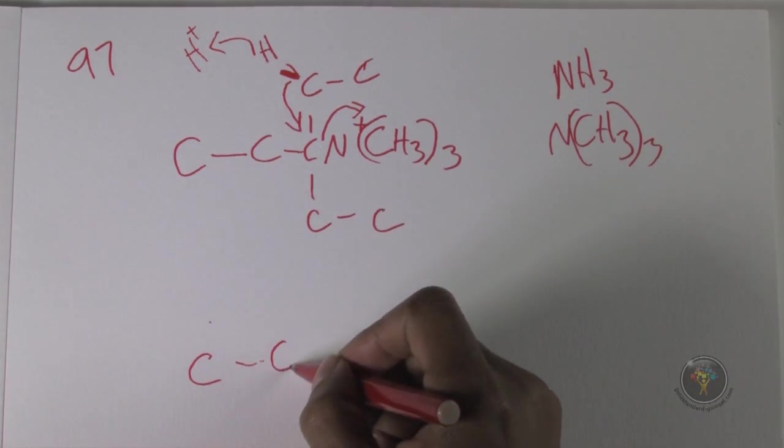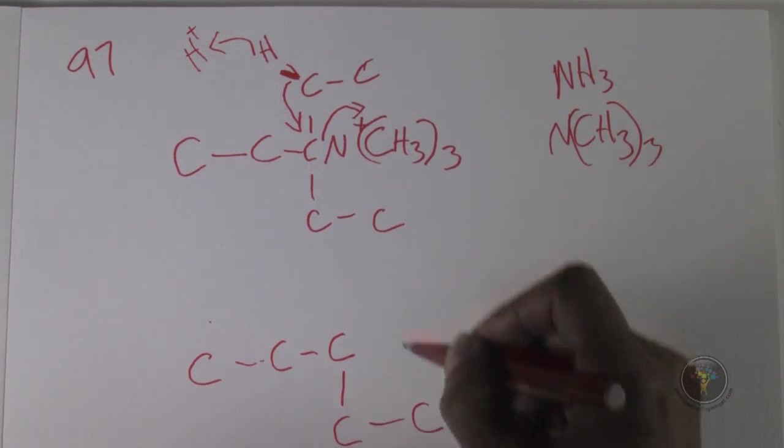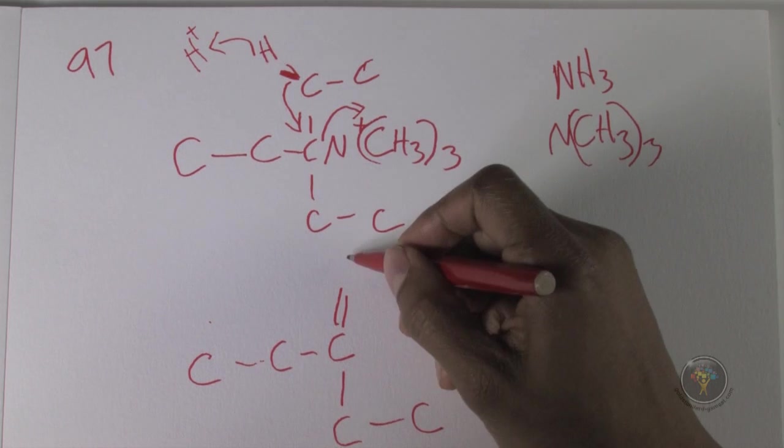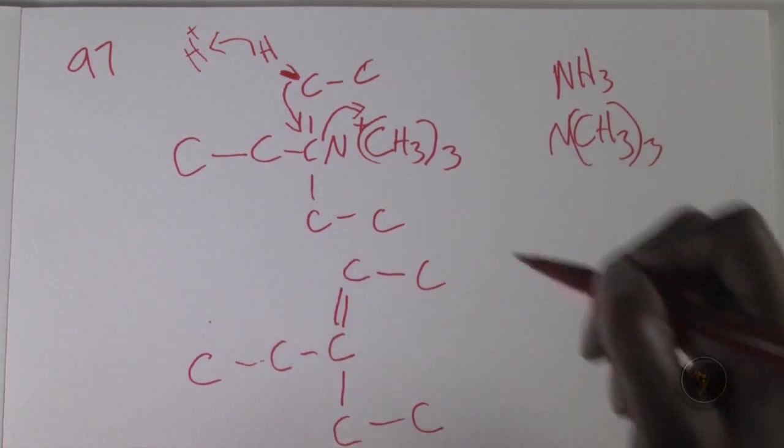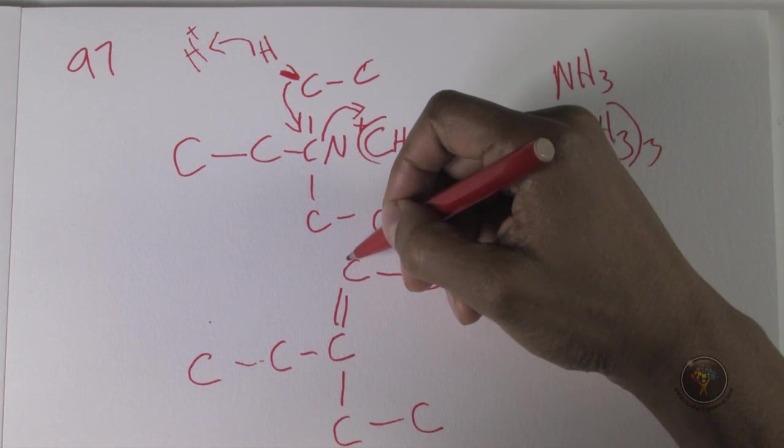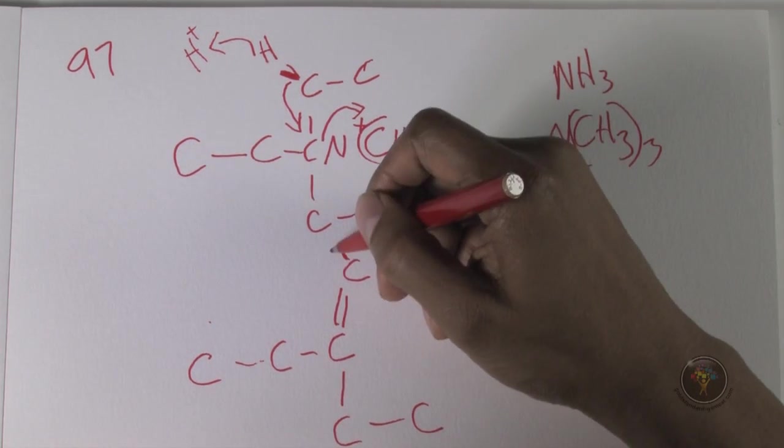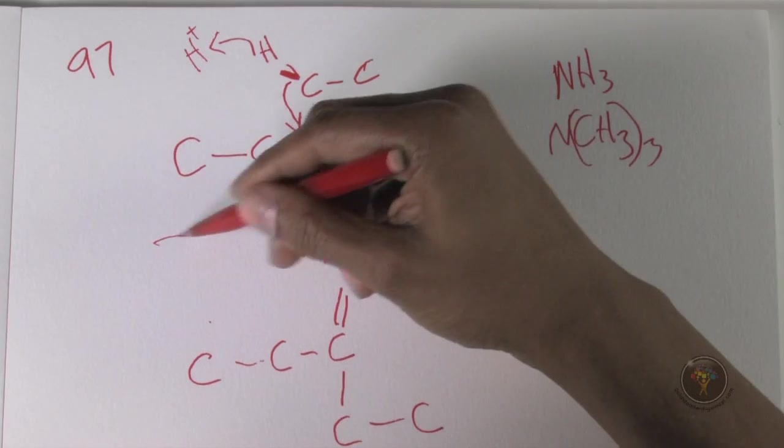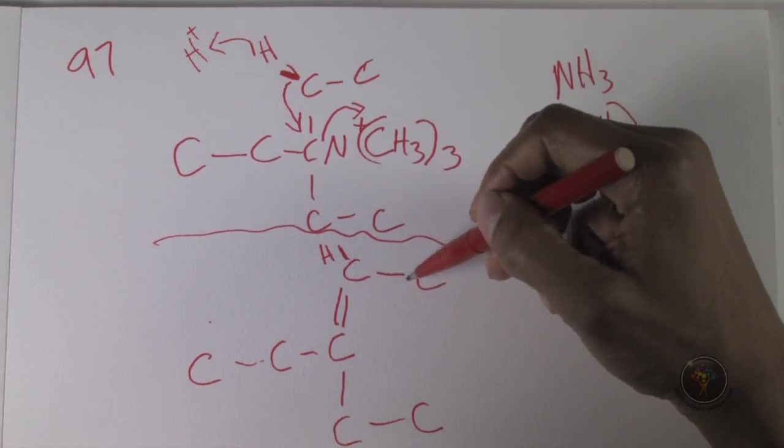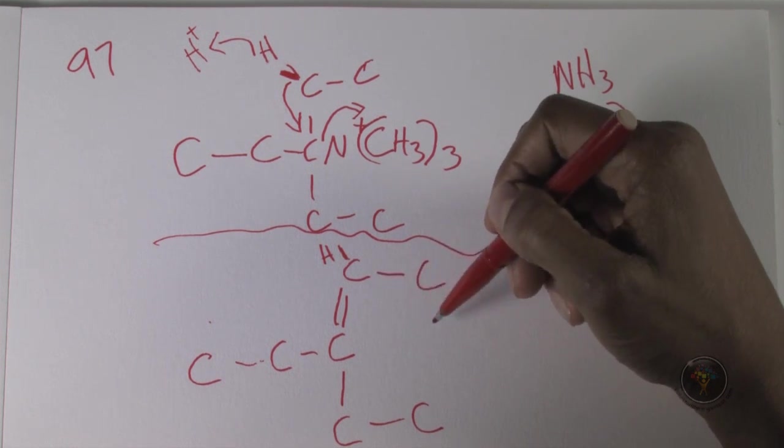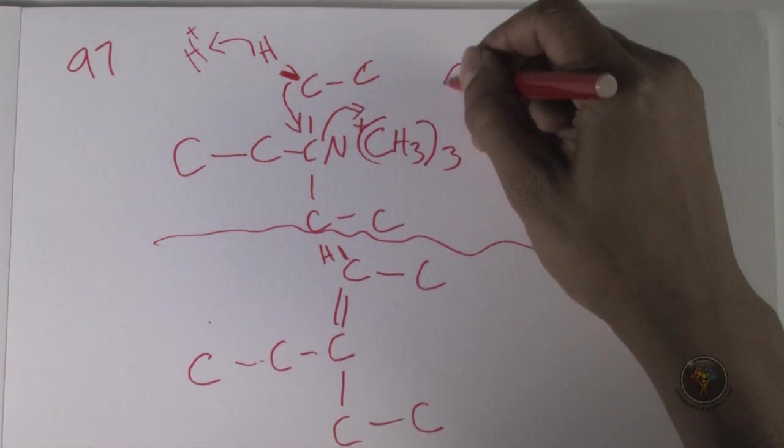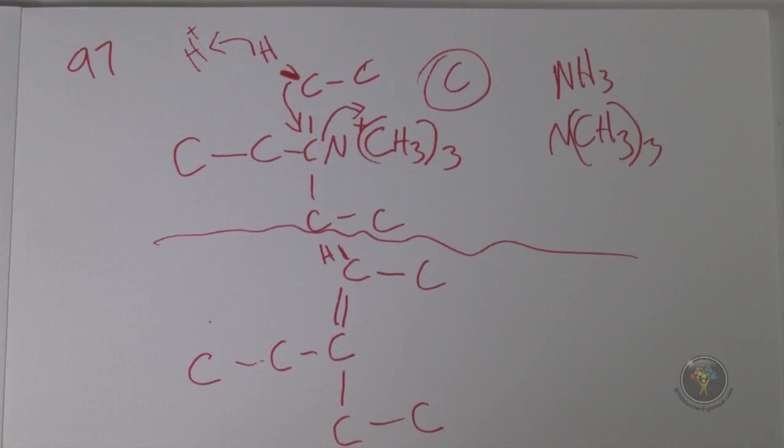And we have a bond that's created here. So just keeping the same structure, we have carbon, carbon, carbon, carbon, carbon, and then we have a double bond that's created here, carbon and carbon. Notice that there's hydrogen here that's not been written. And now you can see that this is the same molecule as the molecule that was given. So this is answer C, answer choice C is the correct answer.